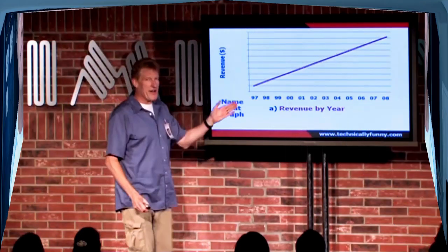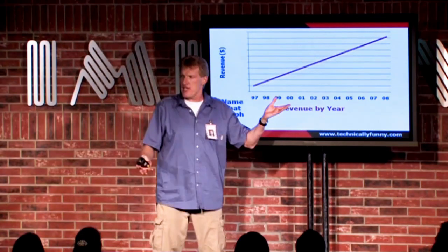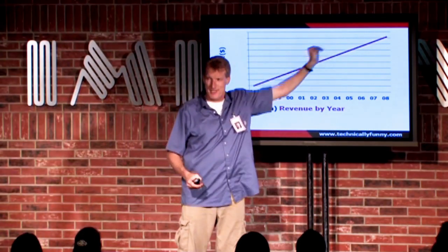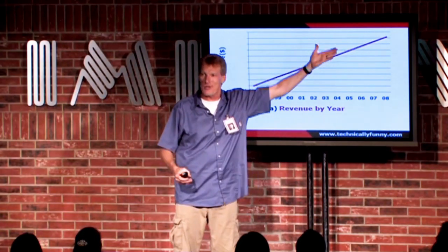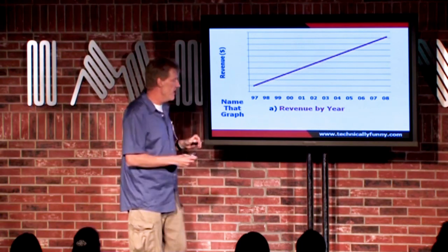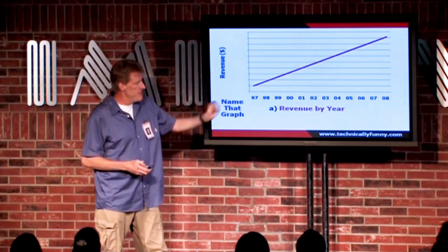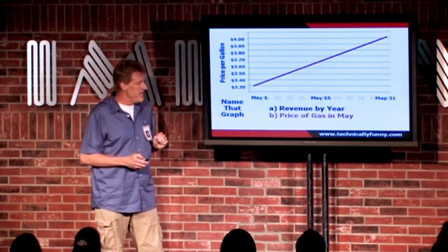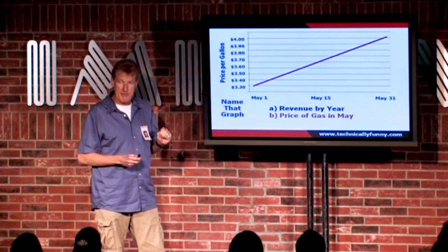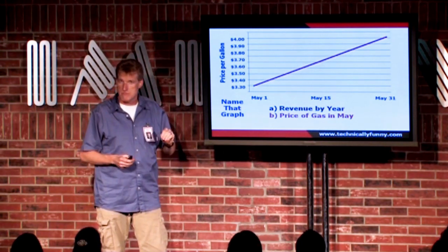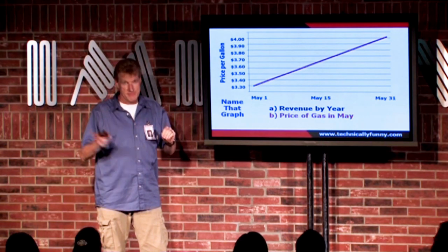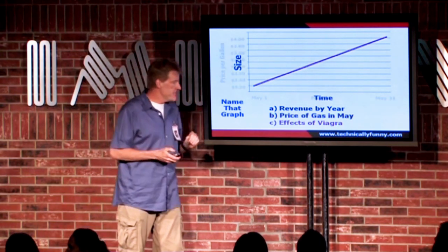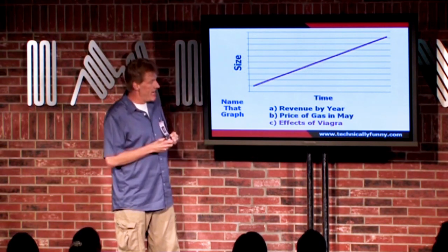Here's one. Very common — do you ever see a graph that doesn't go up and to the right? It's just how they all go, it's like an unwritten law. And that could be A, revenue by year. B, that could be price of gas in May. We've all noticed that. Or C, the effects of Viagra.